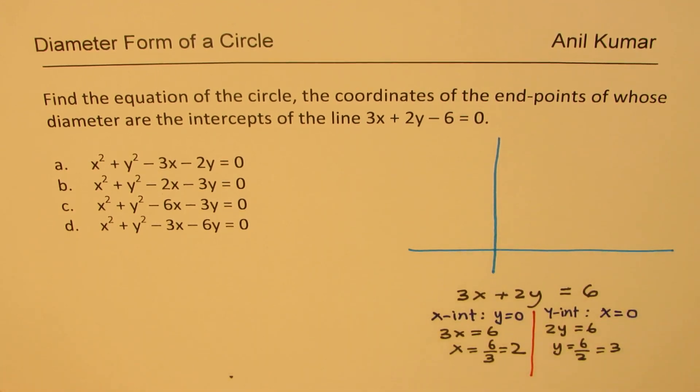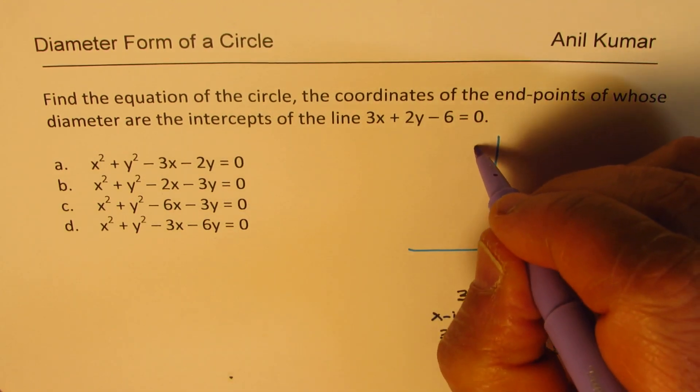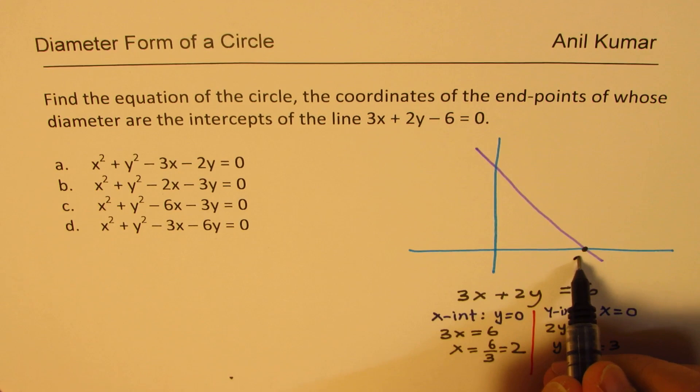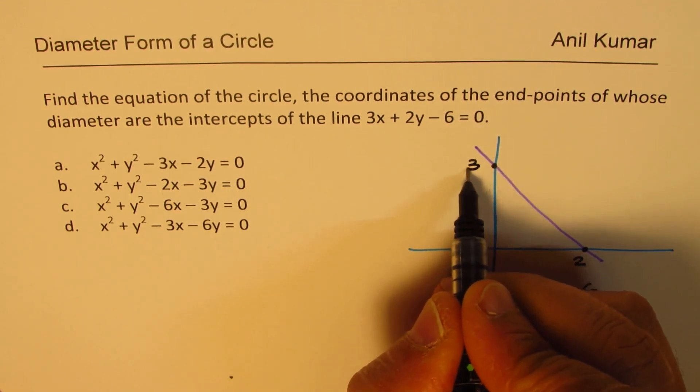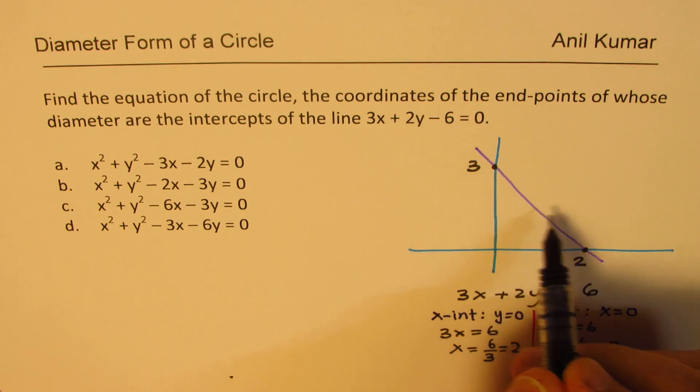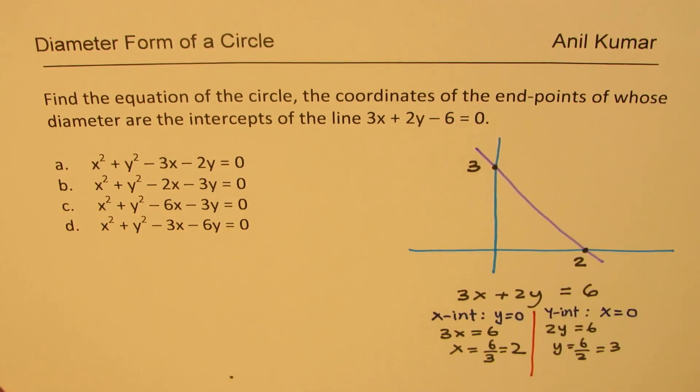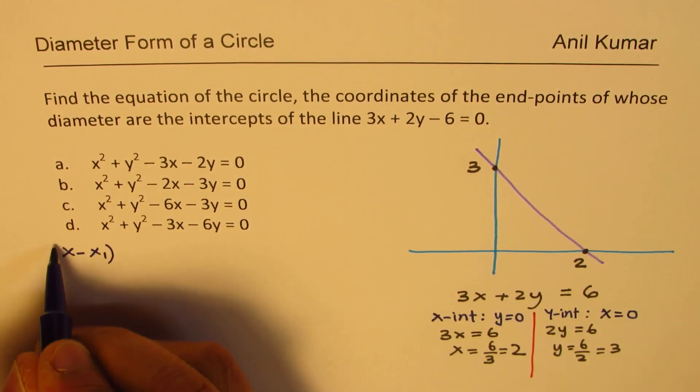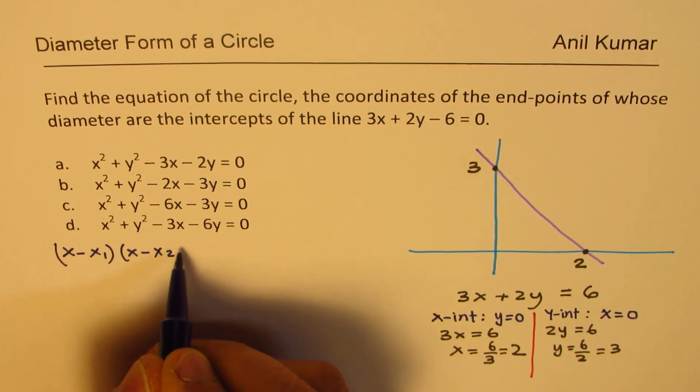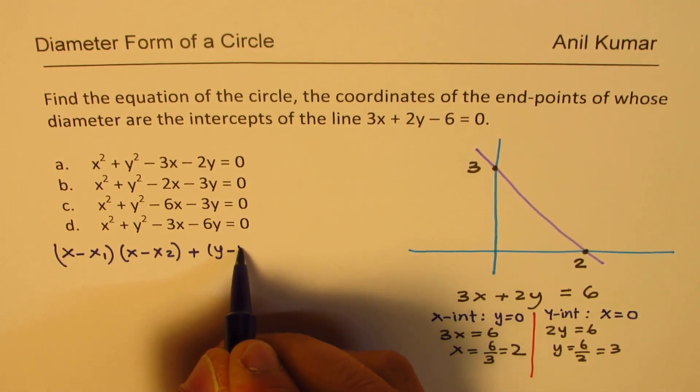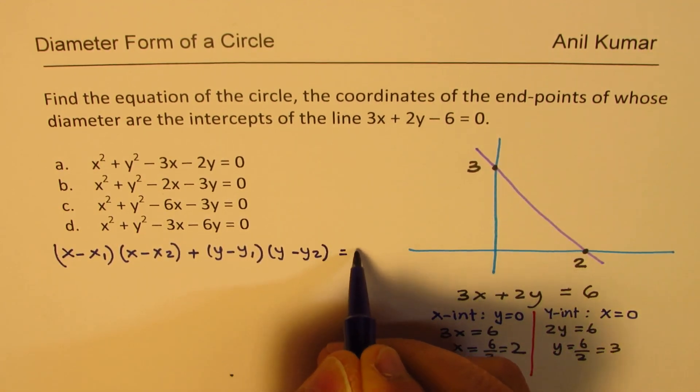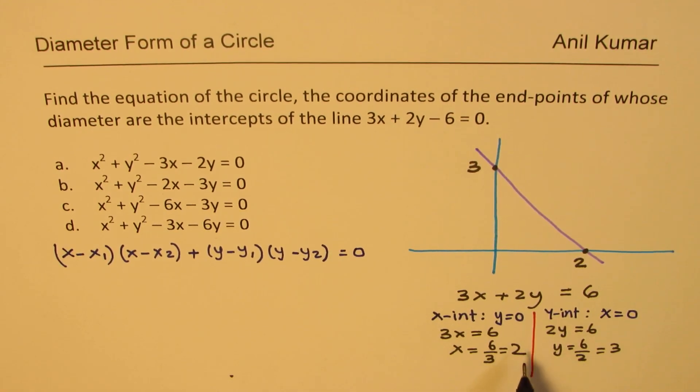So in our line which could be sketched with y intercept of 3 and 2 as your x intercept, let us say that is our line. So here we have the x intercept of plus 2 and y intercept of 3. So that is now the diameter of our circle. What is the formula to be applied? Well it is (x minus x1) times (x minus x2) plus (y minus y1) times (y minus y2) equals to 0.